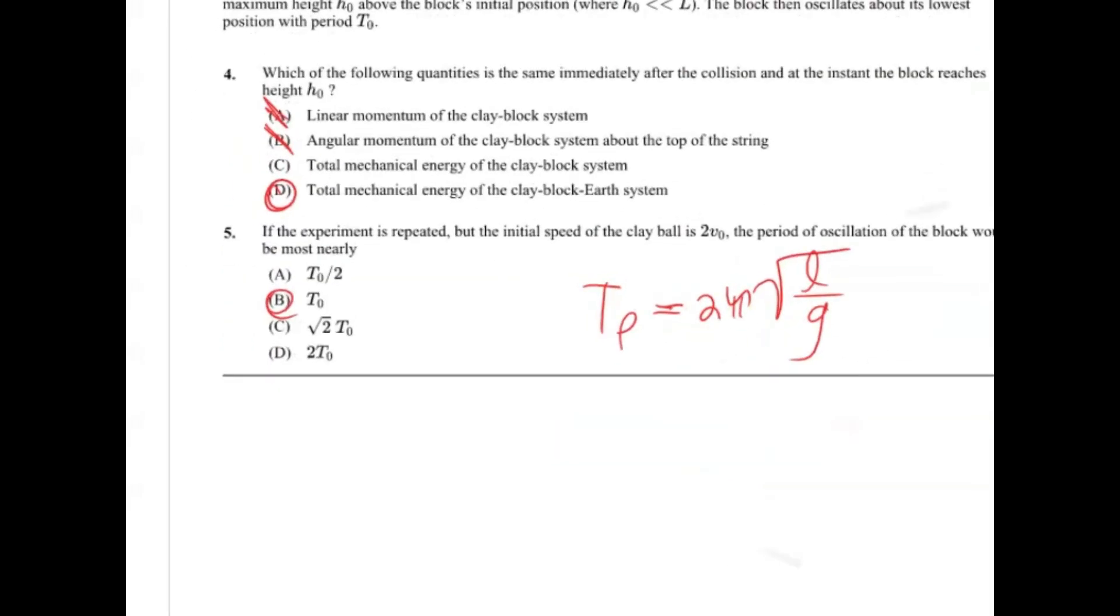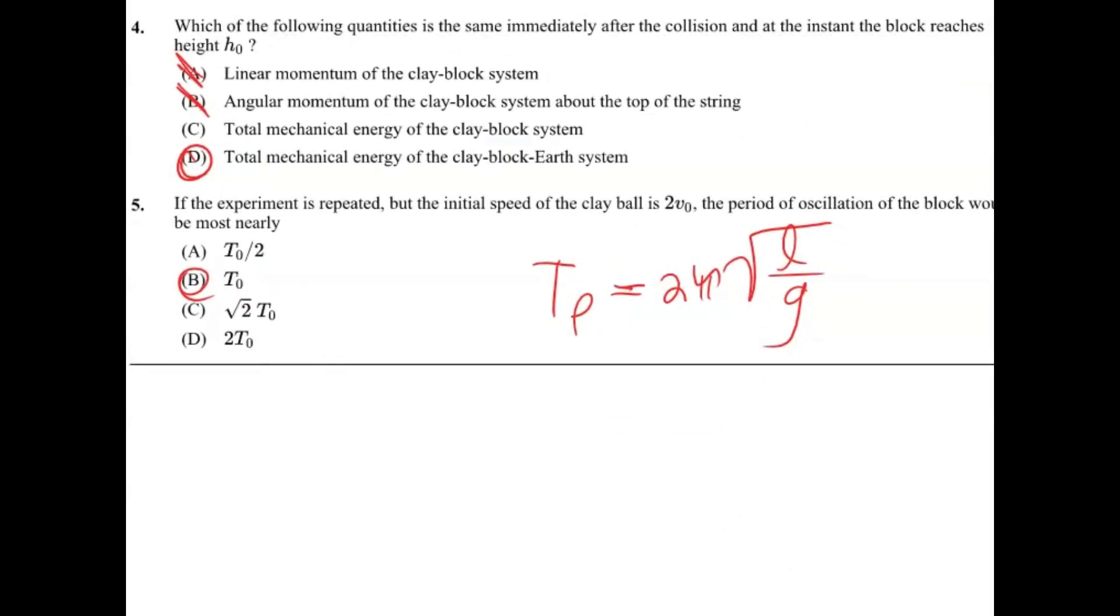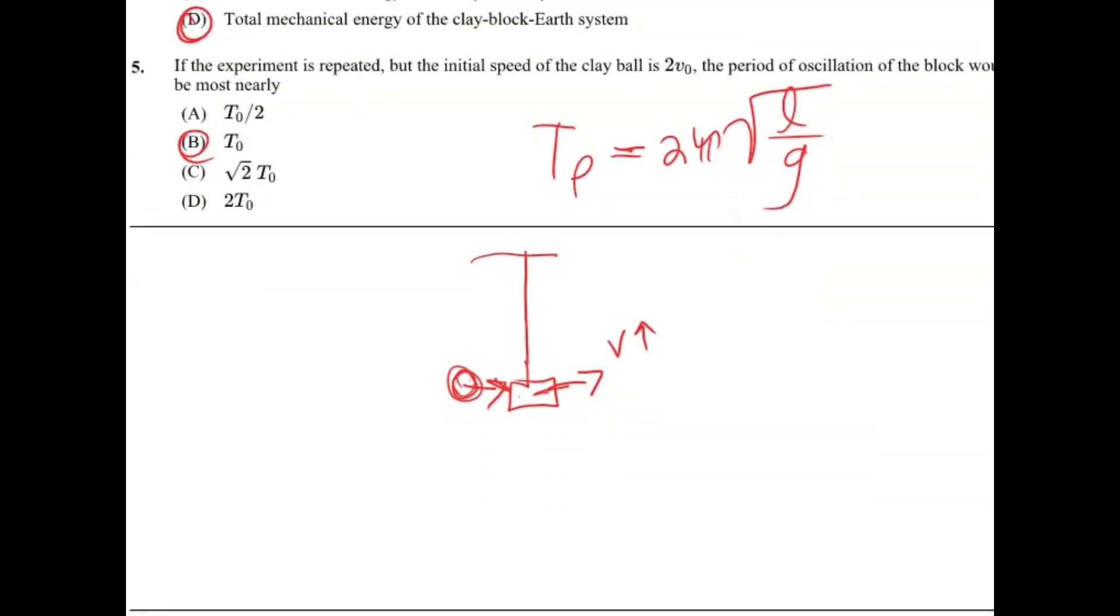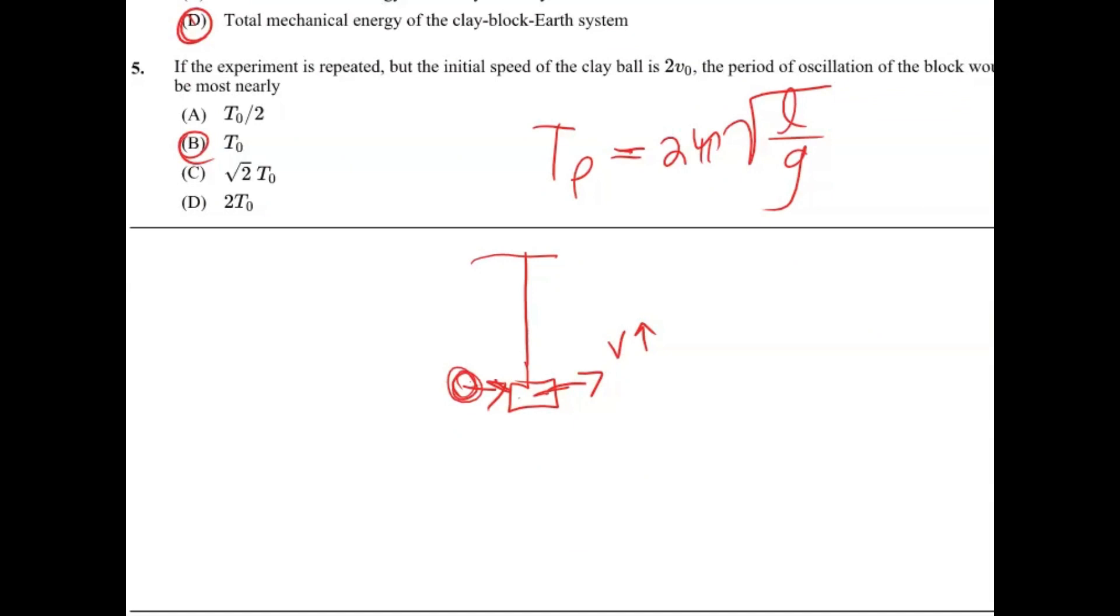So our answer here is choice B. You can also look at it through the lens of how it would affect the other variables. So if you have a greater velocity, this ball or this clay ball, whatever thing sticks to the block and it's coming faster. And so if it sticks to it, the entire system is going to move with a greater velocity.